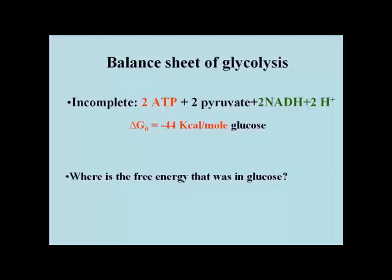The standard free energy change for the whole of glycolysis through pyruvate can be summed up — just add all the free energy changes for the reactions as I've shown them to you — and it comes to minus 44 kilocalories per mole of glucose. That's 44 kilocalories out of a potential of 686 kilocalories for the whole respiratory pathway from glucose and oxygen to water and CO2.